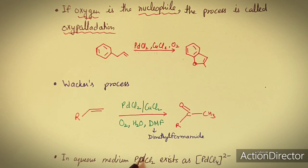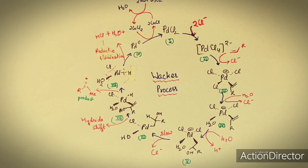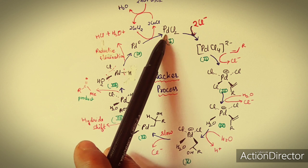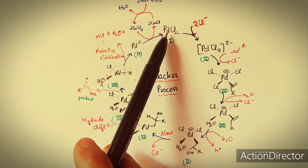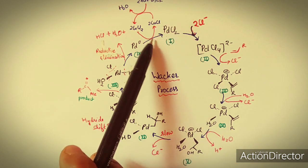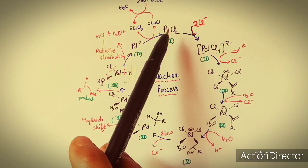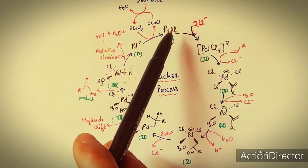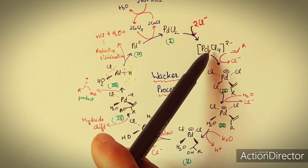The Wacker process occurs in aqueous medium. In aqueous medium, PdCl₂ exists as [PdCl₄]²⁻, where the oxidation state of palladium is +2. Now we will see the catalytic cycle of the Wacker process. We can consider the cycle to start from palladium chloride — this is the catalyst. In aqueous medium it exists as [PdCl₄]²⁻.